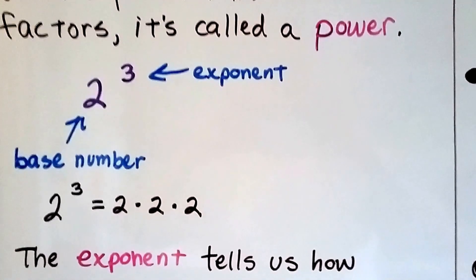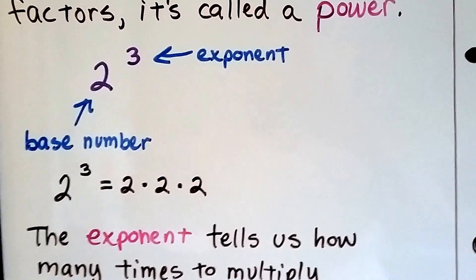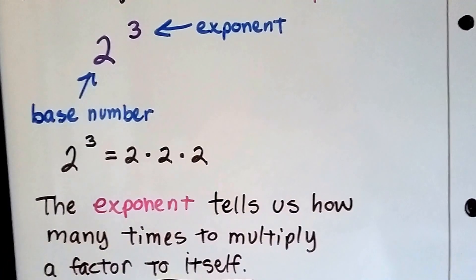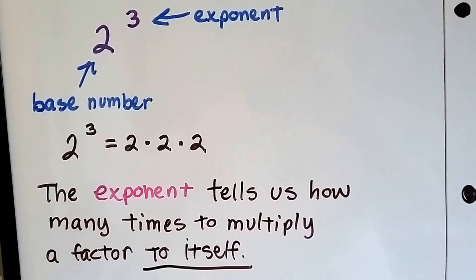So if we have 2 to the third power, that is this 2 with a little 3 exponent up here and the 2 is the base number. That means the 3 is telling us how many times to multiply this factor, this base number, to itself.